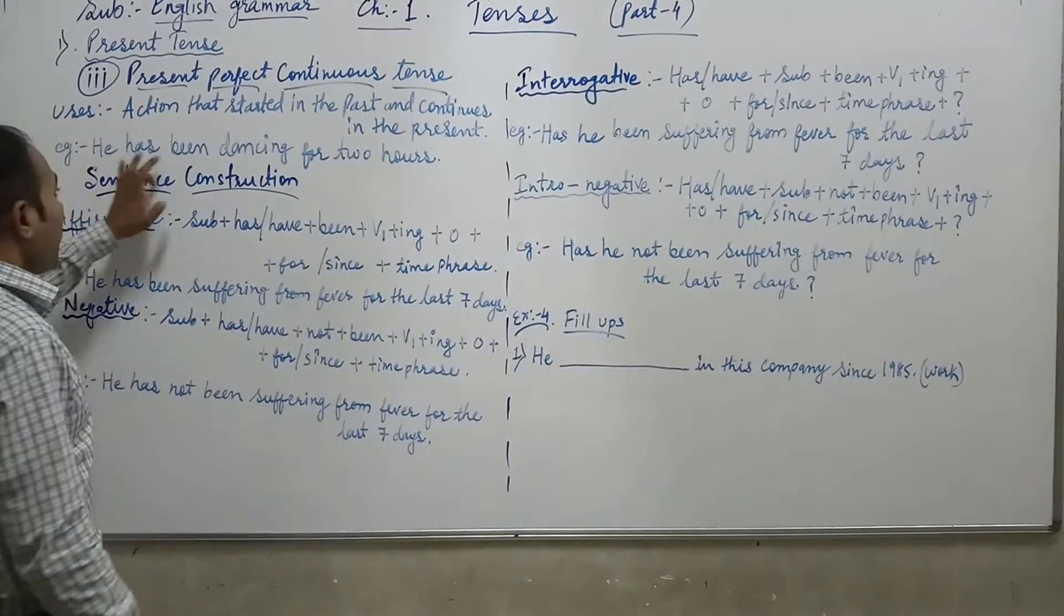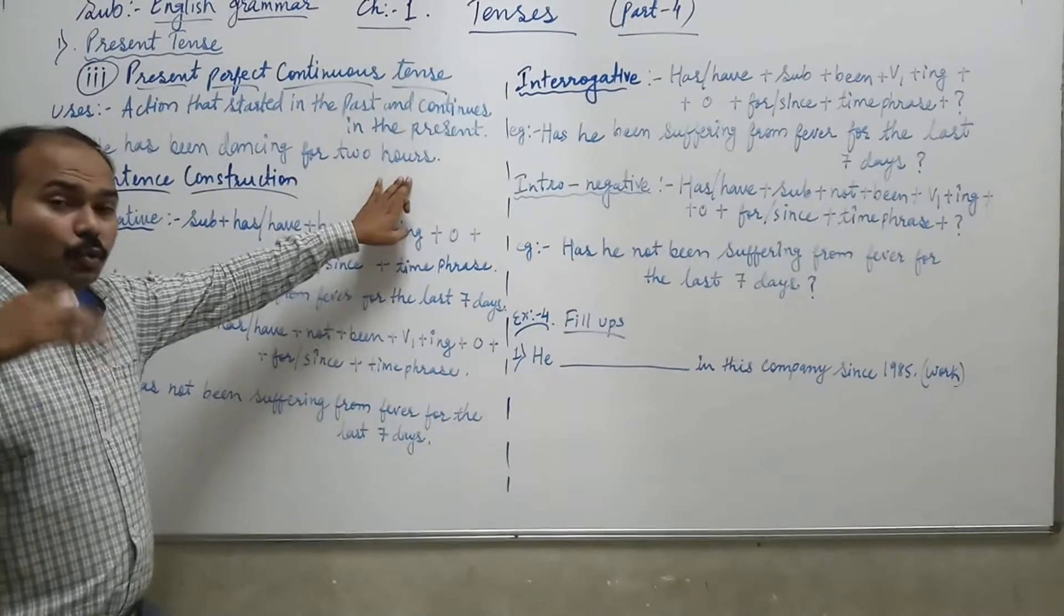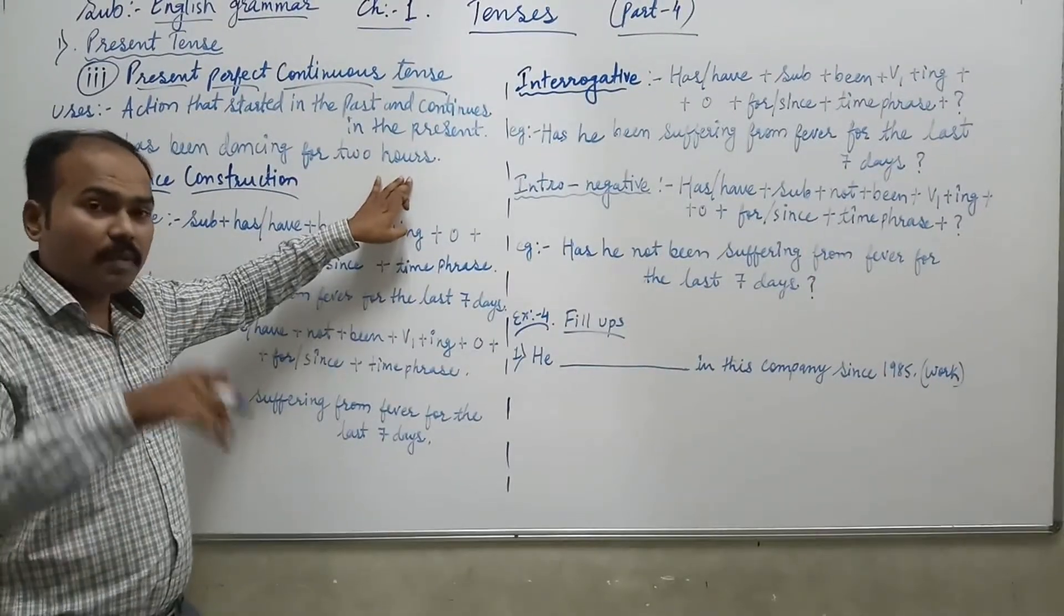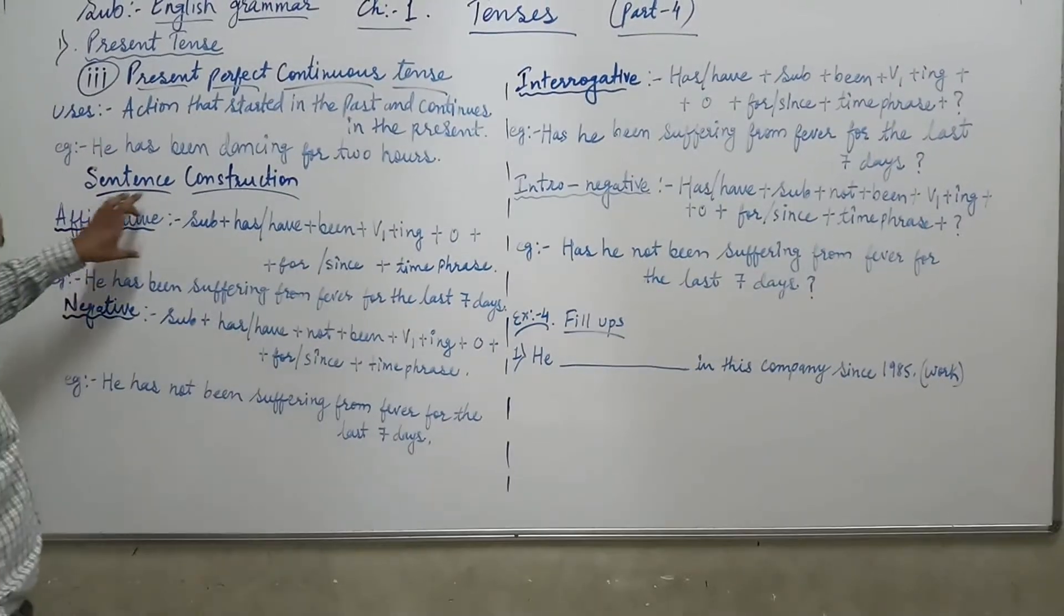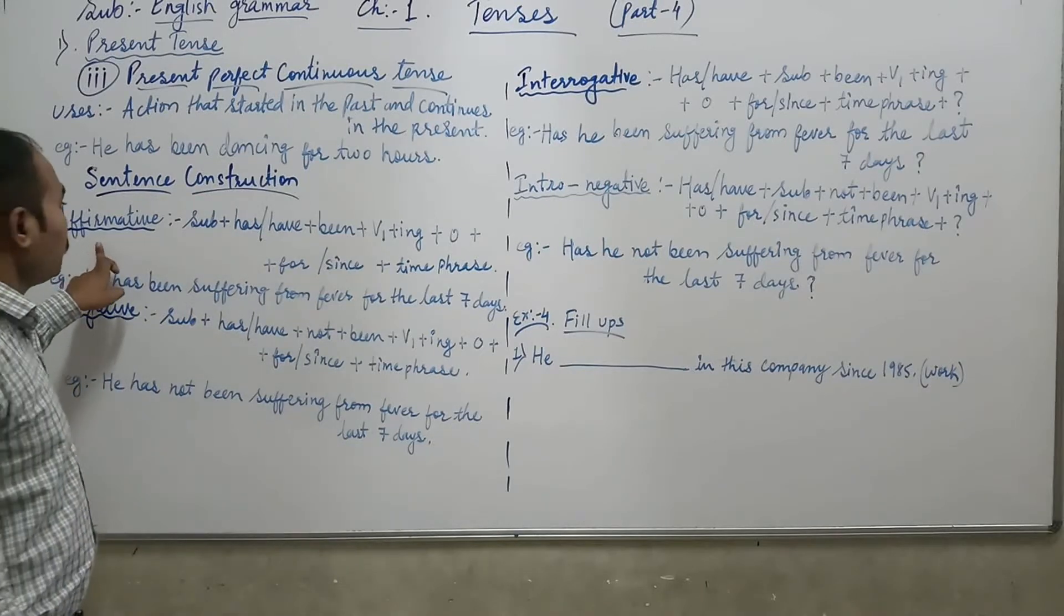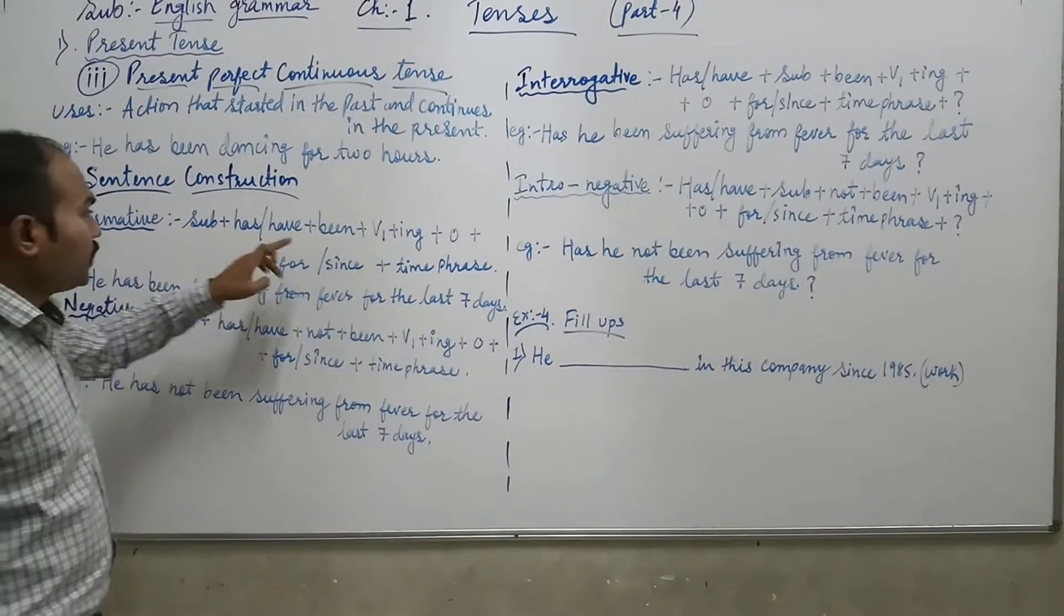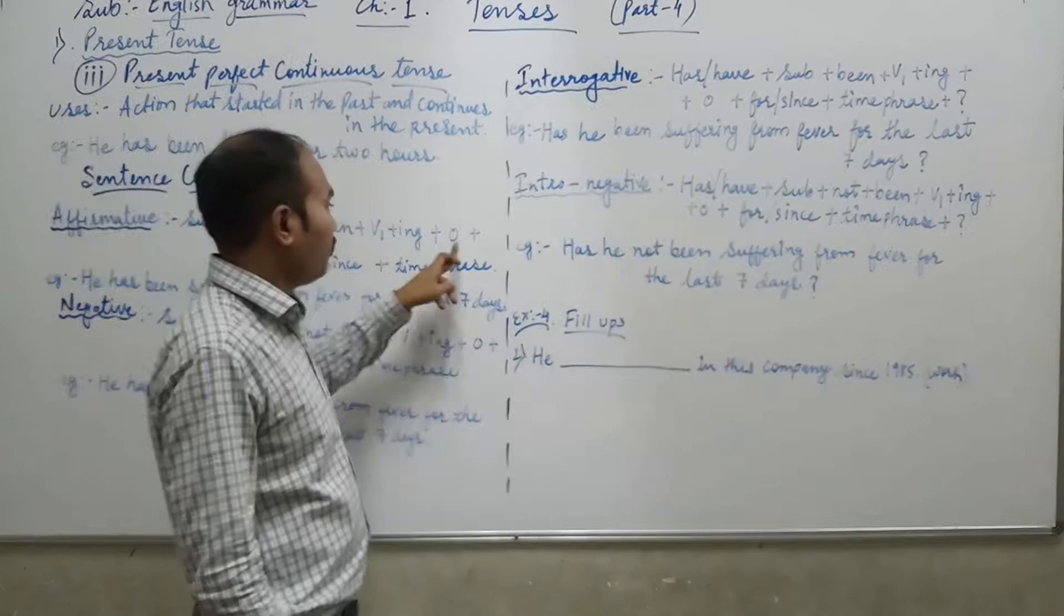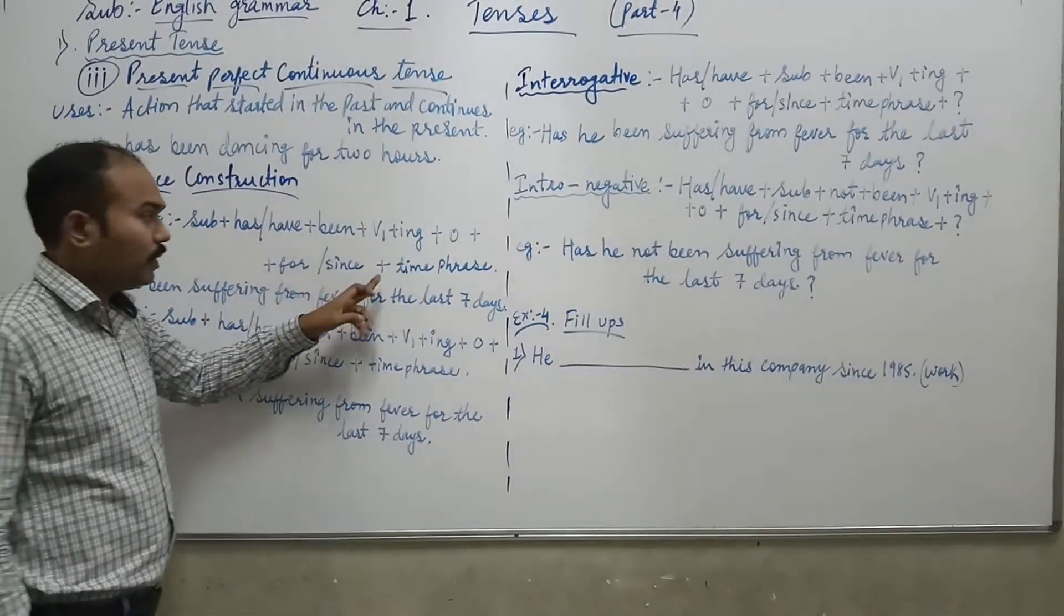See the example, he has been dancing for two hours. Matlab 2 hours ke pehle usne start kiya dancing karna aur abhi bhi wo dance kar raha hai. Now how to make sentence construction, let us see. For affirmative sentence you have to use subject, then has/have plus been plus V1 plus ING plus other words plus for/since plus time phrase.